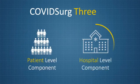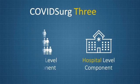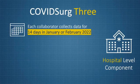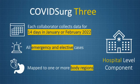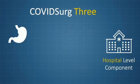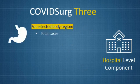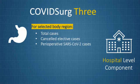In terms of the hospital level component, each collaborator should collect data over a 14-day period in January or February 2022. All emergency and elective cases should be included from one or more pre-specified body regions, for example, the brain, heart, lungs, etc. Within each selected body region, we will assess the total number of cases performed, the number of elective cases cancelled and the number of patients identified with perioperative SARS-CoV-2.